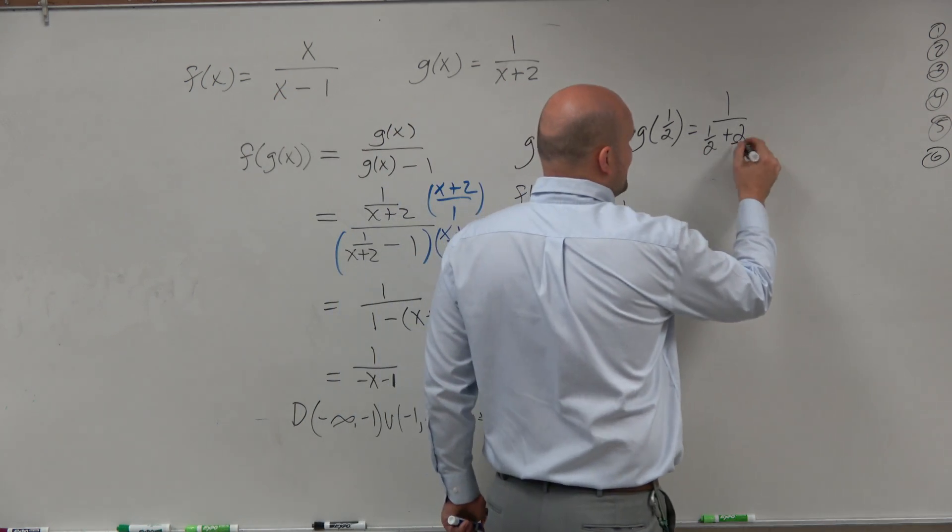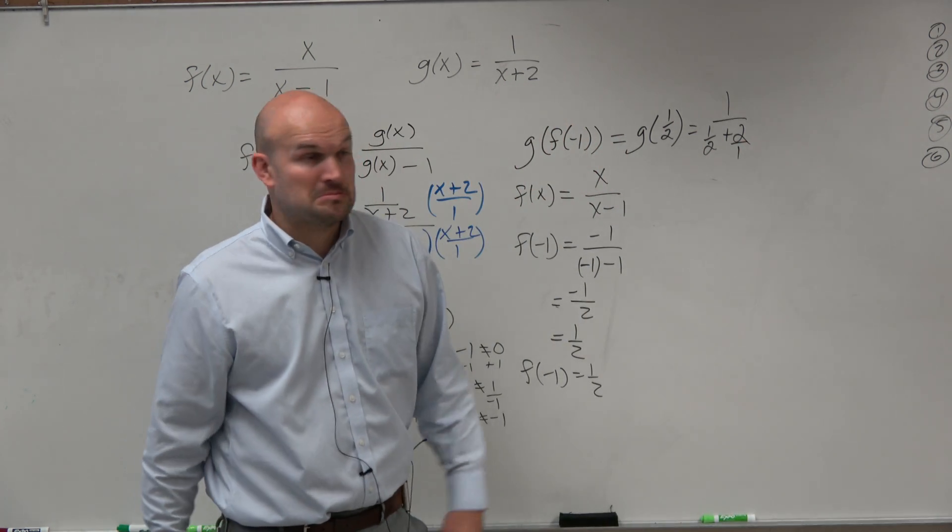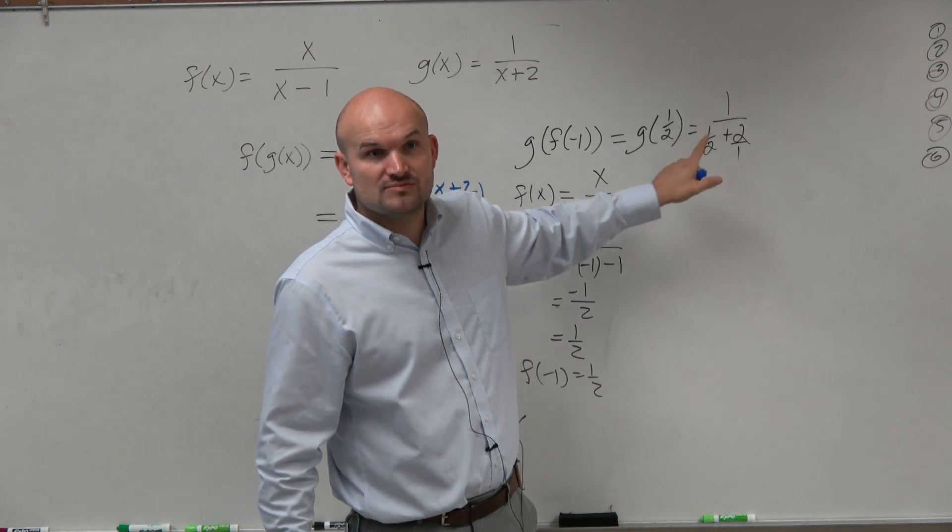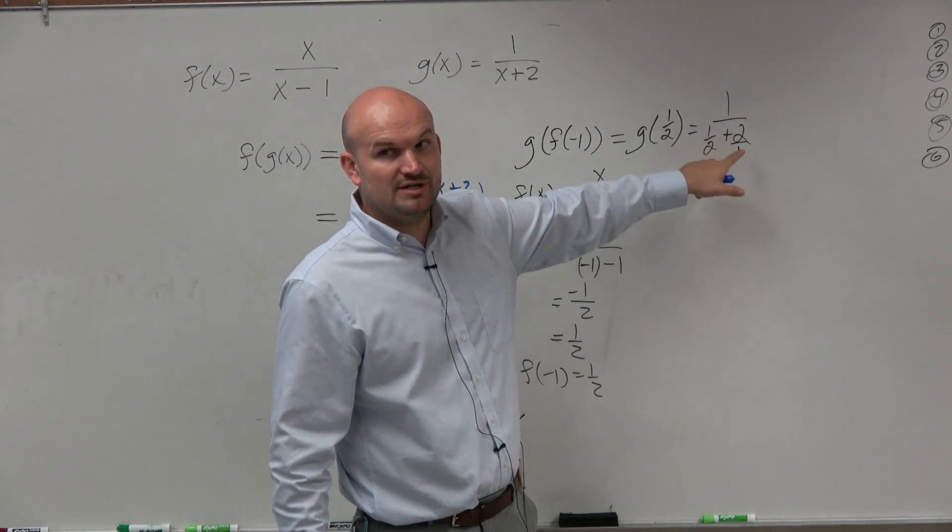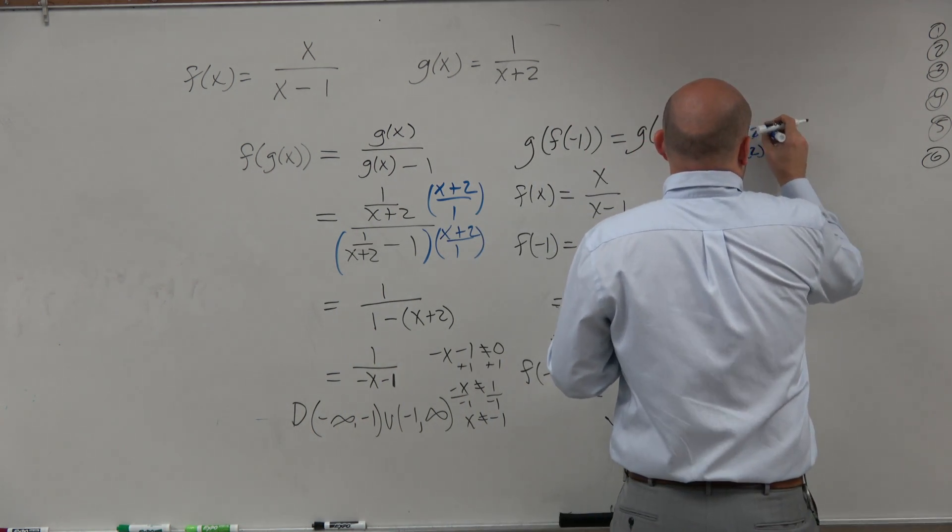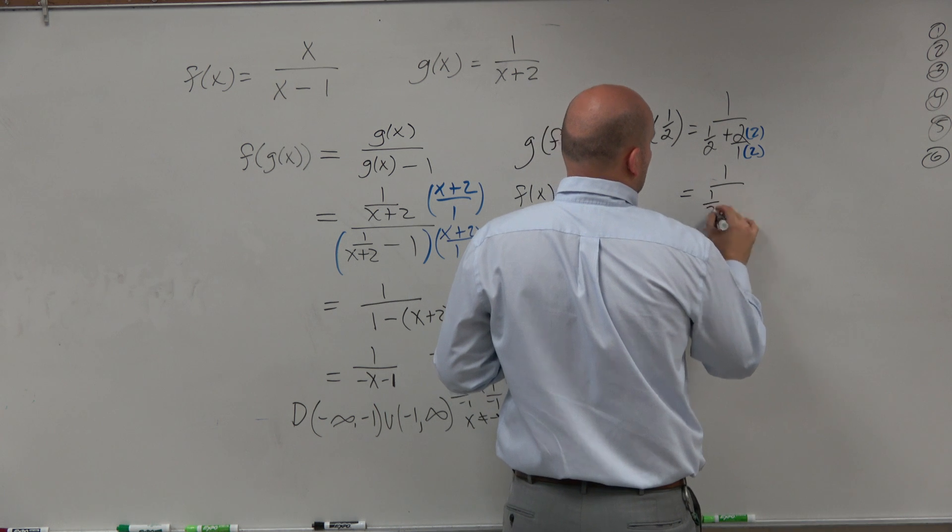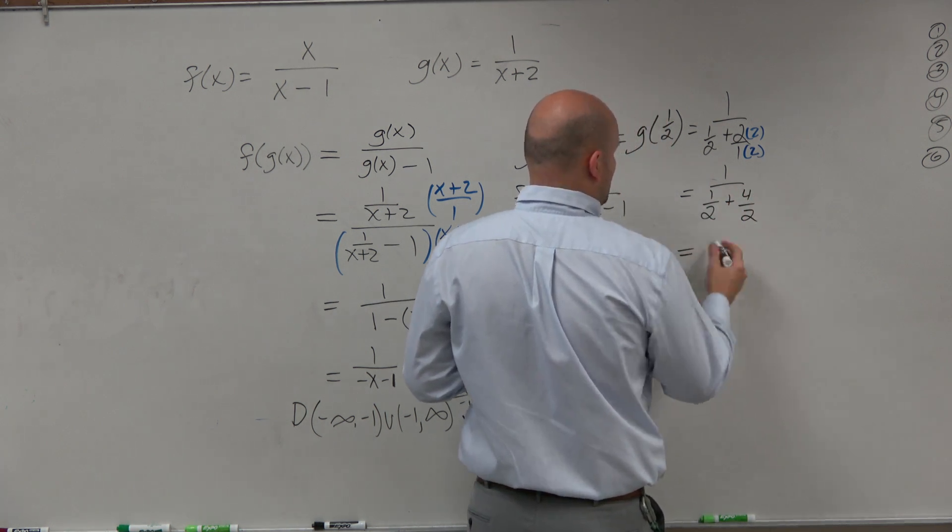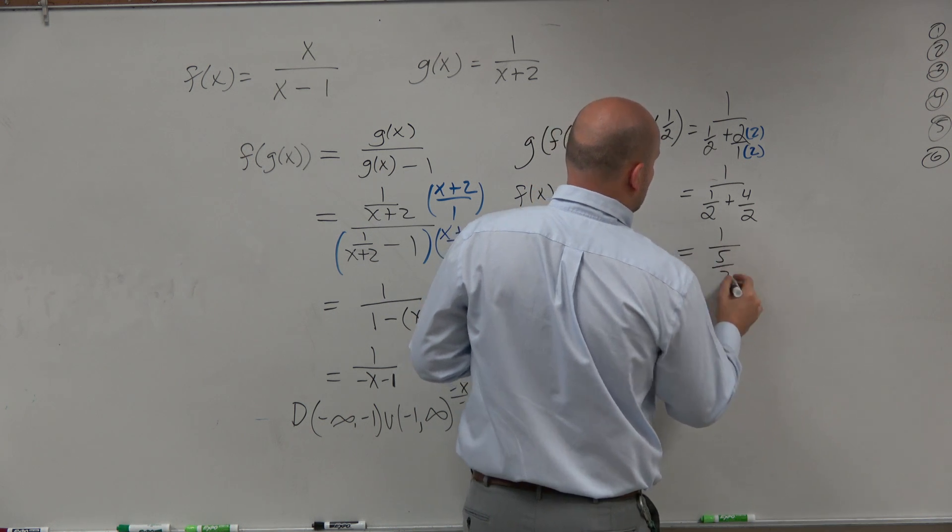To add fractions, guys, you have to have common denominators, right? What's the common denominator of 2 and 1? The common denominator is 2. So multiply this by 2. Multiply that by 2. Really the same thing as 1 over 1 half plus 4 halves, right? Which is equal to 1 over 5 halves.